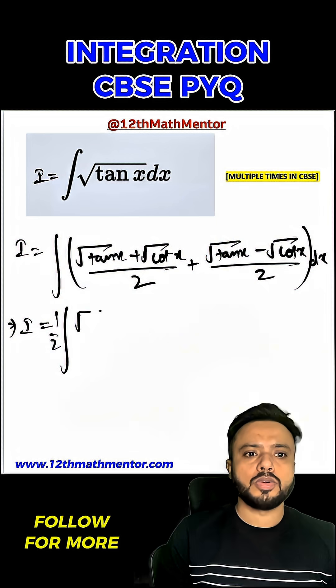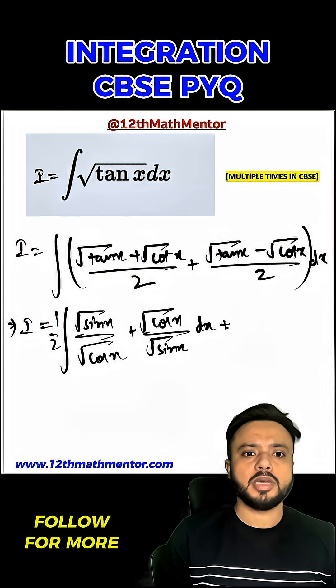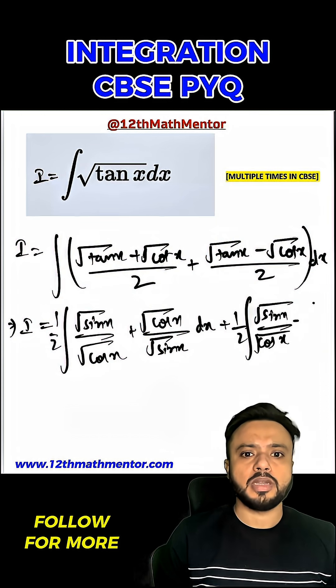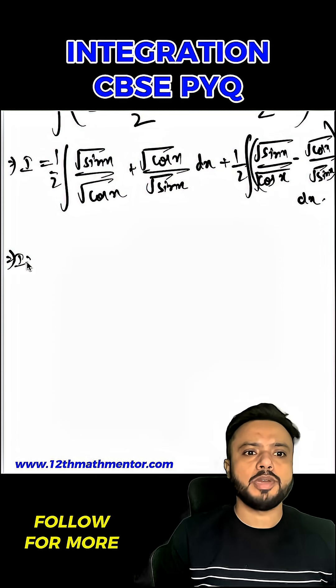So I would be equal to 1 upon 2 integral of sin x plus cos x upon root of sin x cos x dx plus 1 upon 2 integral of sin x minus cos x upon root of sin x cos x dx.